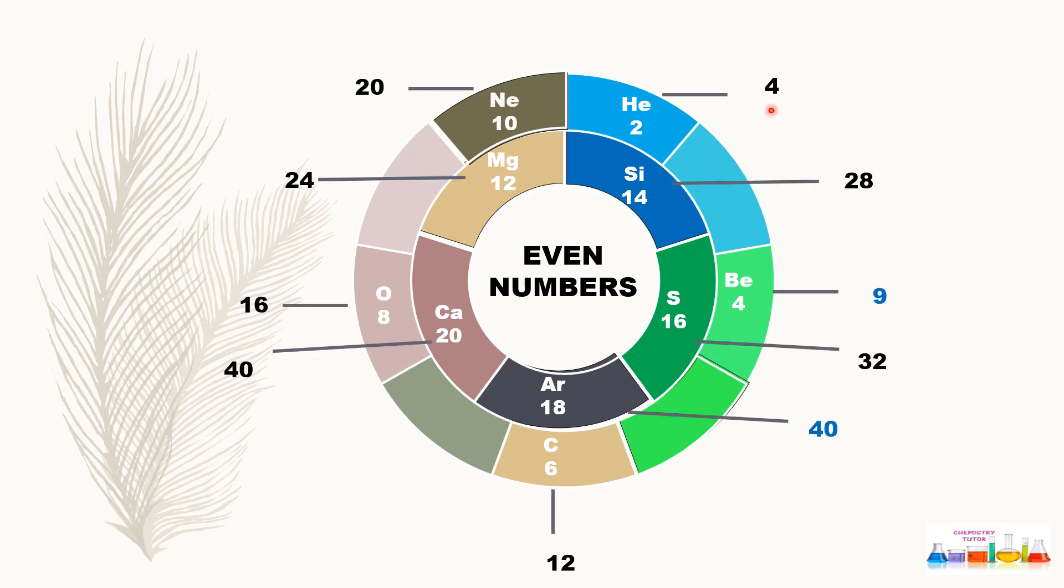Just have a look at their atomic mass or mass number: helium is 4, beryllium is 9, carbon is 12, oxygen 16, neon 20, magnesium 24, silicon 28, sulfur 32, argon 40, and calcium is also 40.